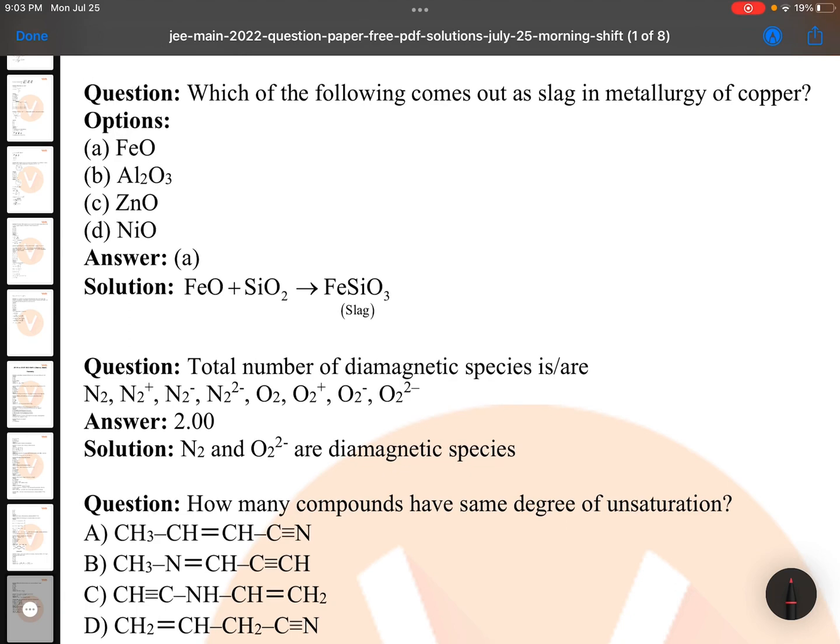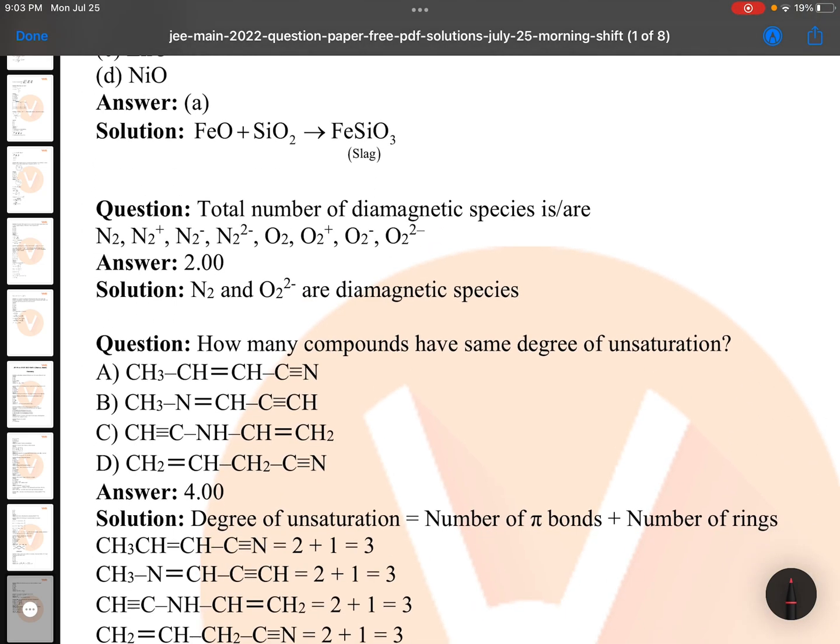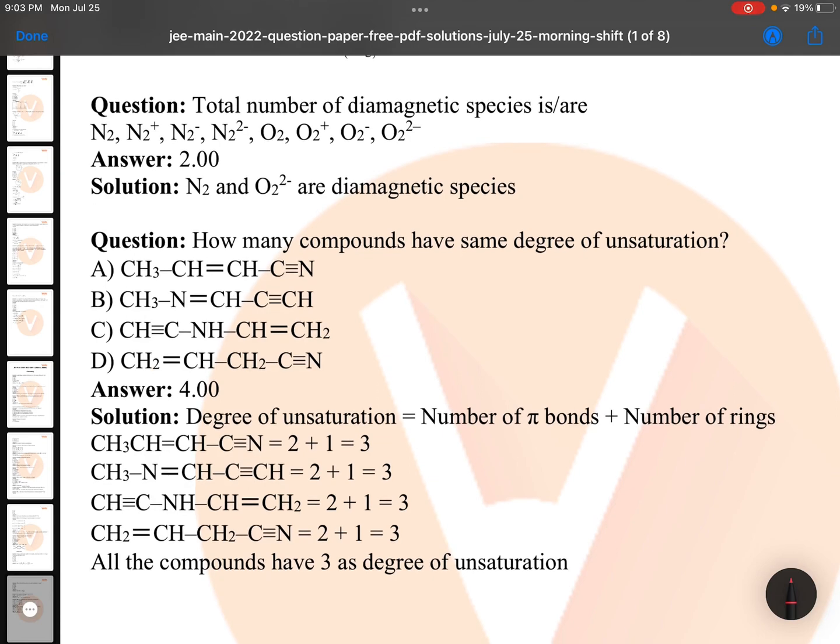Which of the following comes out as slag in metallurgy of copper? In metallurgy of copper, FeO reacts with SiO2 to form FeSiO3. FeSiO3 is slag. So FeO will come out in the form of slag. FeO is impurity and we are adding SiO2, which is acidic flux.